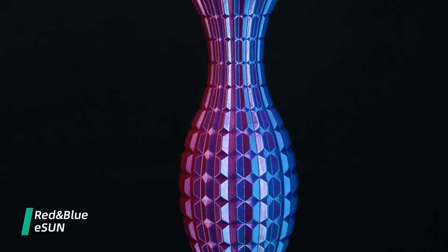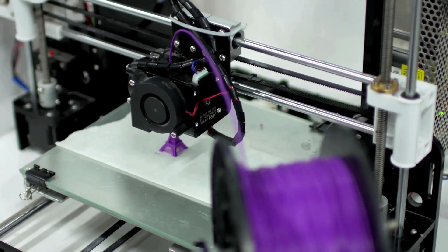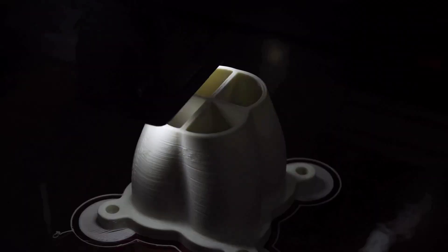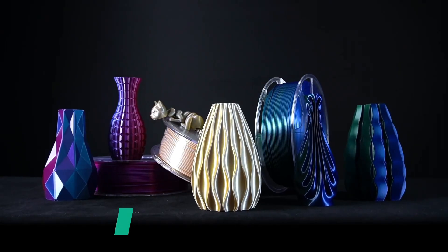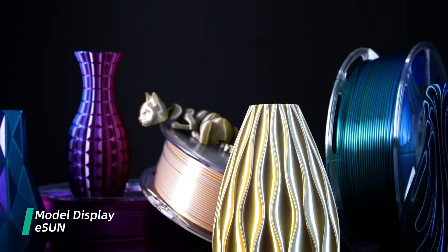Let's first talk about PLA. It's a biodegradable thermoplastic derived from renewable resources like cornstarch or sugarcane. It is known for its ease of use, low printing temperature, and minimal warping, making it a popular choice for beginners.